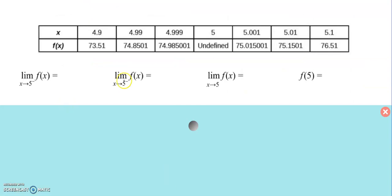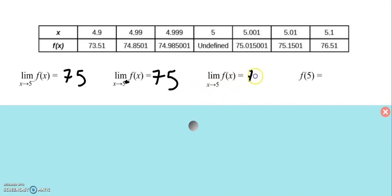You can also evaluate limits numerically. If you have a table of values, you can say: as x is getting closer to 5 from the left, my y-values appear to be getting closer to 75. As my x-values get closer to 5 from the right, my y-values are also getting closer to 75. Therefore, overall, as x gets closer to 5, my y-values are getting closer to 75. Please note again, this is a completely different question than asking what is f(5) — there is no y-value at x = 5, so f(5) is undefined.